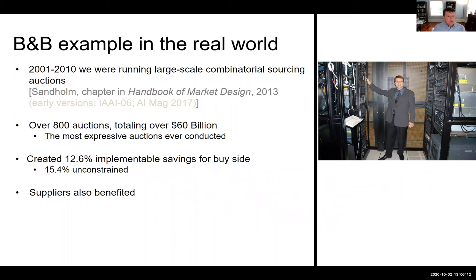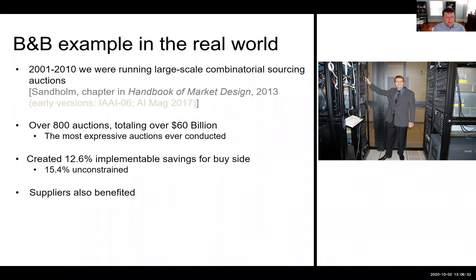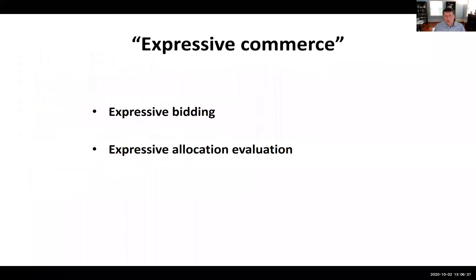On the applied side: from 2001 to 2010 we were running large-scale combinatorial sourcing auctions. We conducted over 800 auctions totaling over $60 billion, and these were the most expressive auctions ever conducted. We created 12.6% of implementable savings for the buy side, which would have been 15.4% unconstrained, and the suppliers also benefited. We call this expressive commerce because it is such a broad generalization of combinatorial auctions.